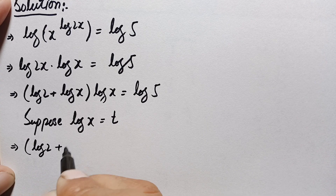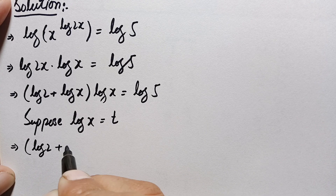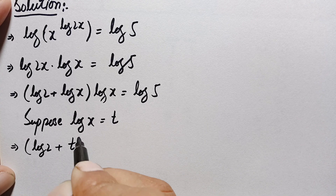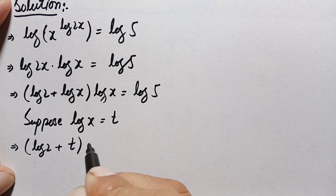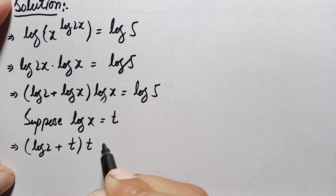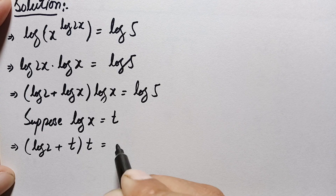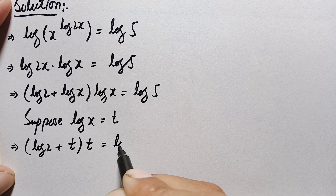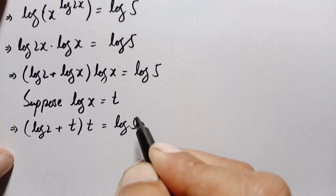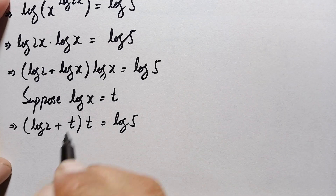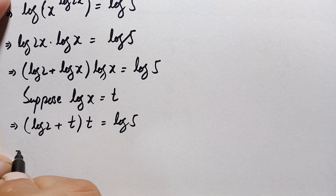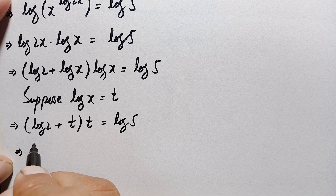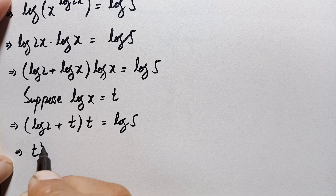So t times t is simply t squared, giving us t squared plus t times log 2 is equal to log 5.